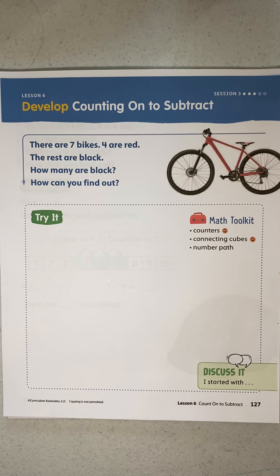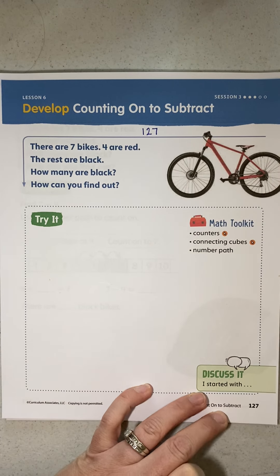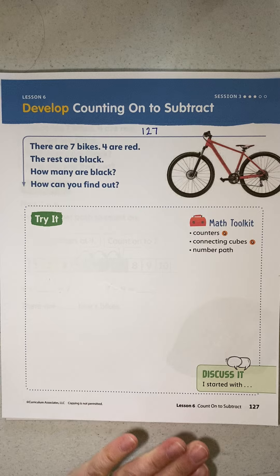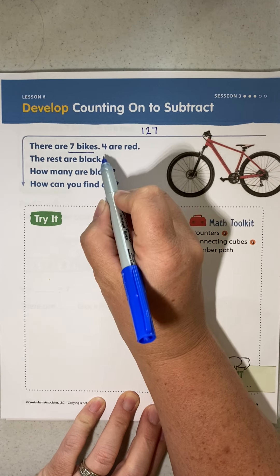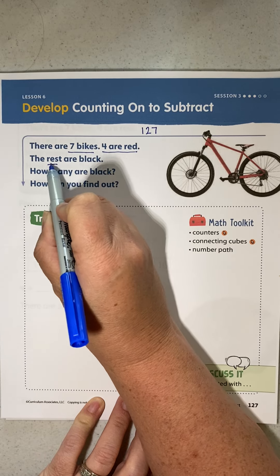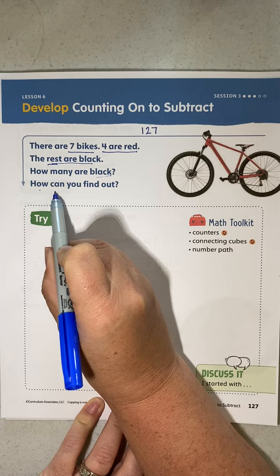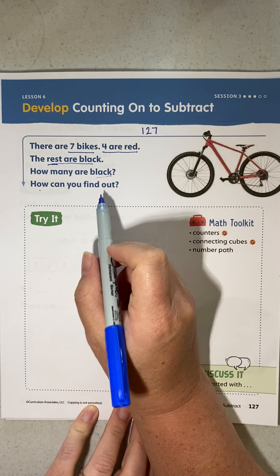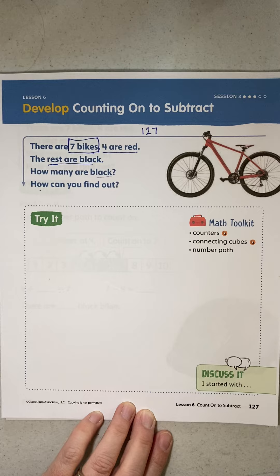Lesson 6, Session 3, Page 127: Counting On to Subtract. There are 7 bikes, 4 are red, the rest are black. How many are black? How can you find out? Well, it tells us here that there are 7 bikes.